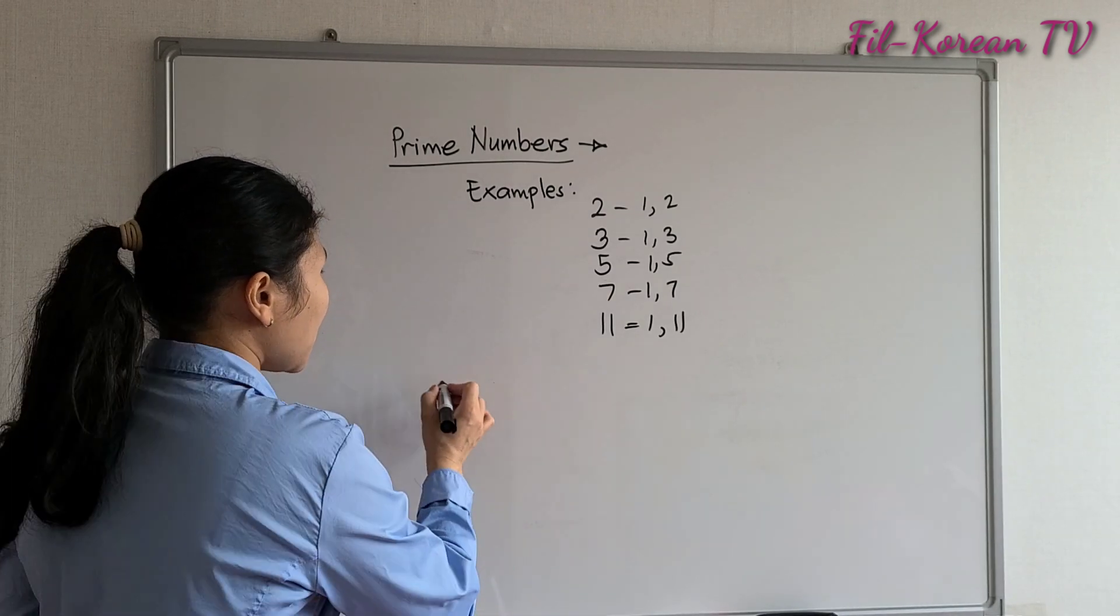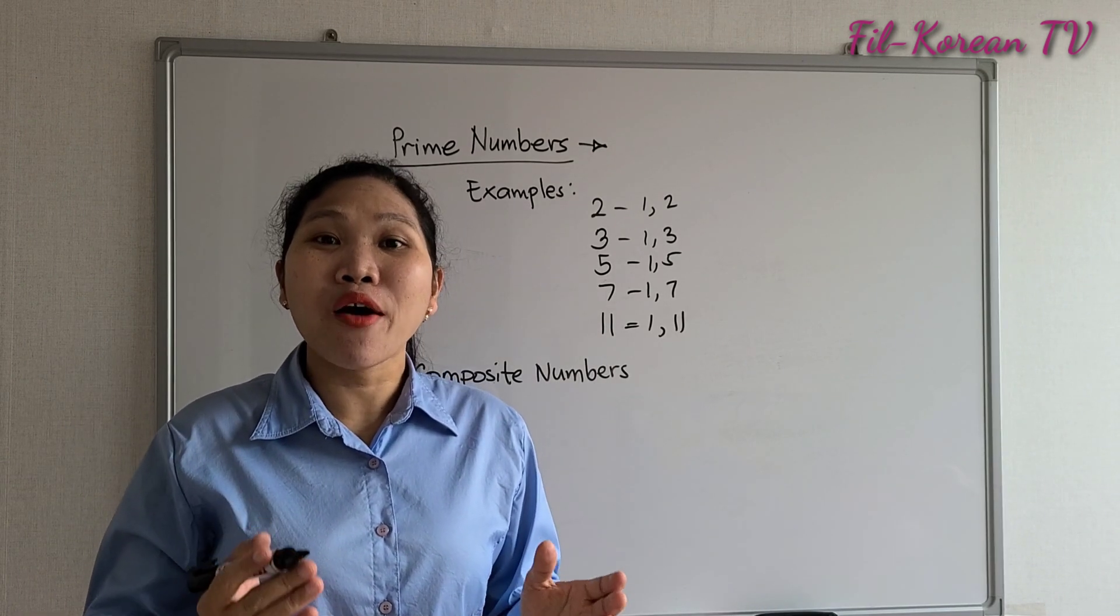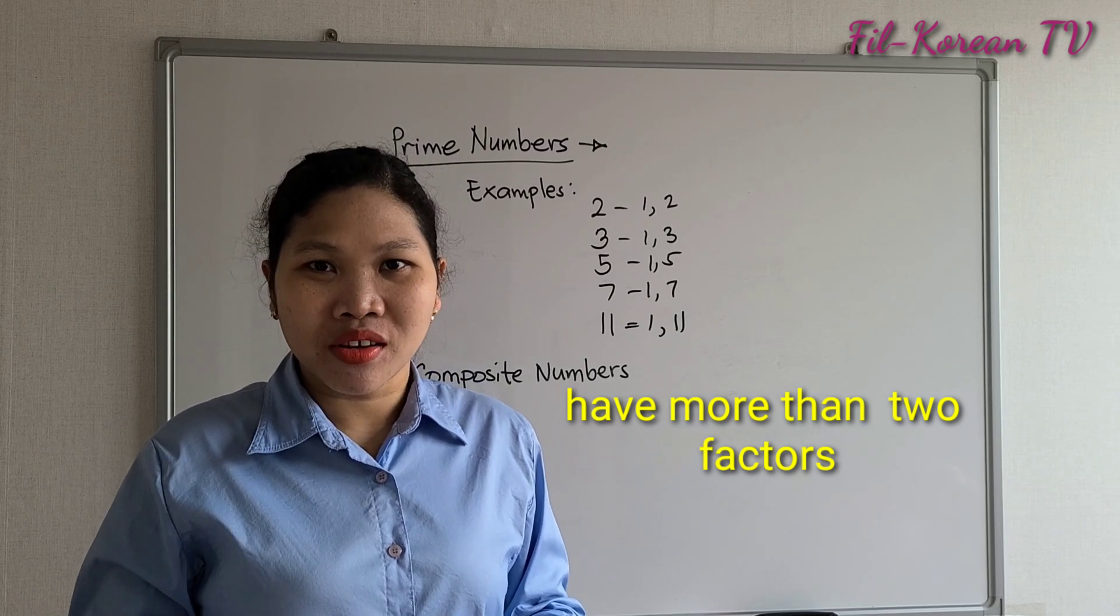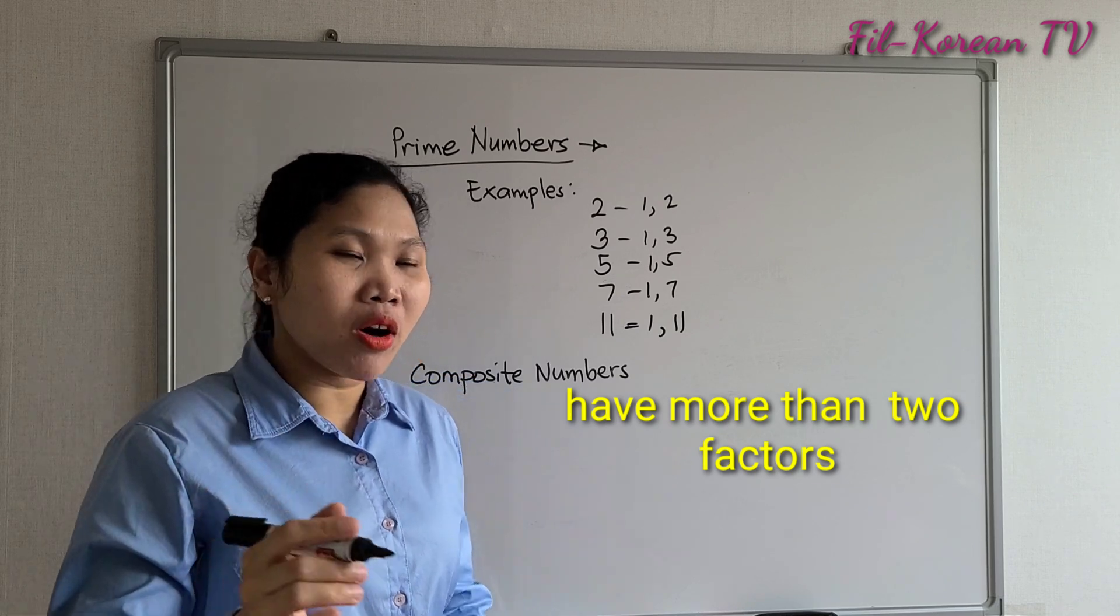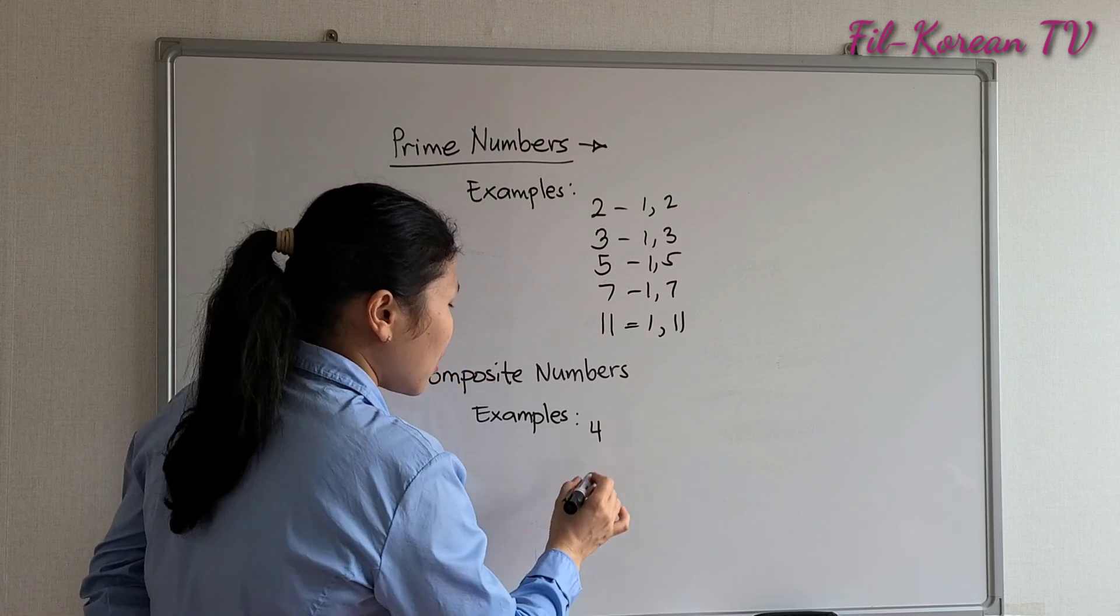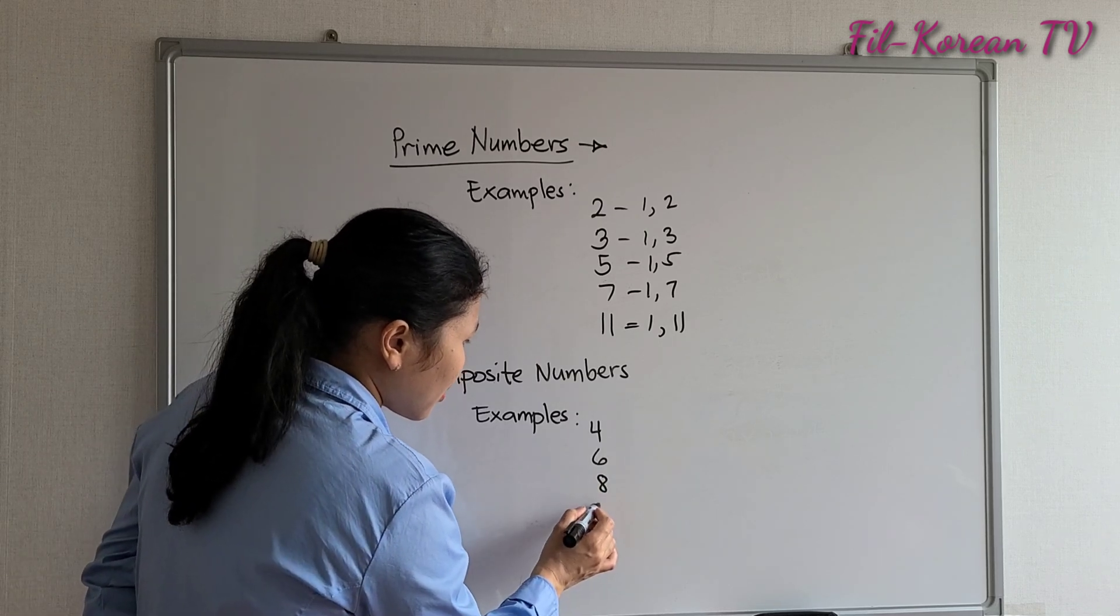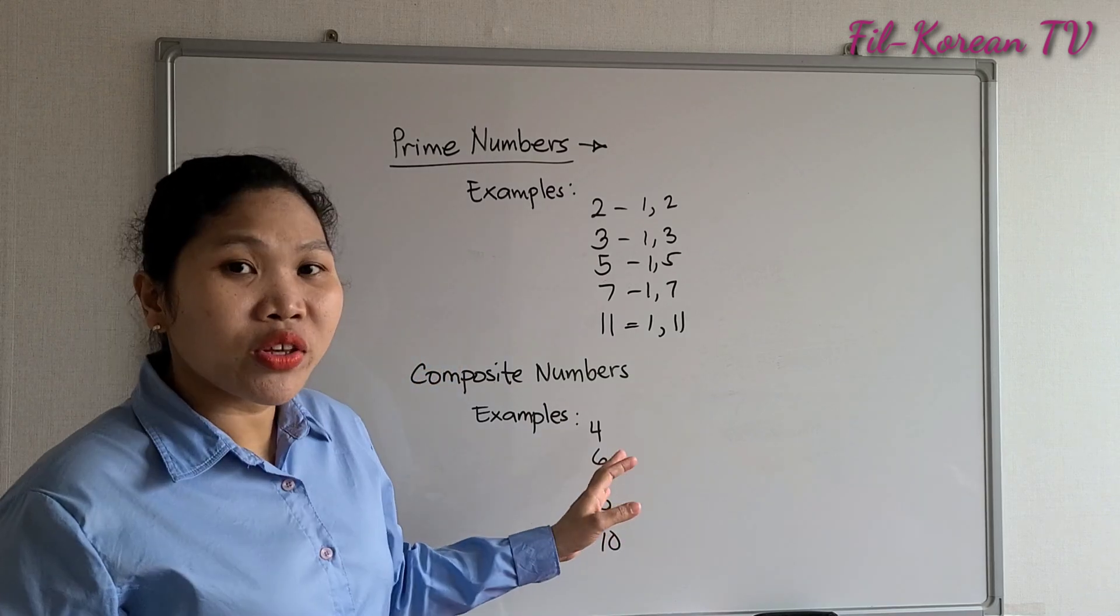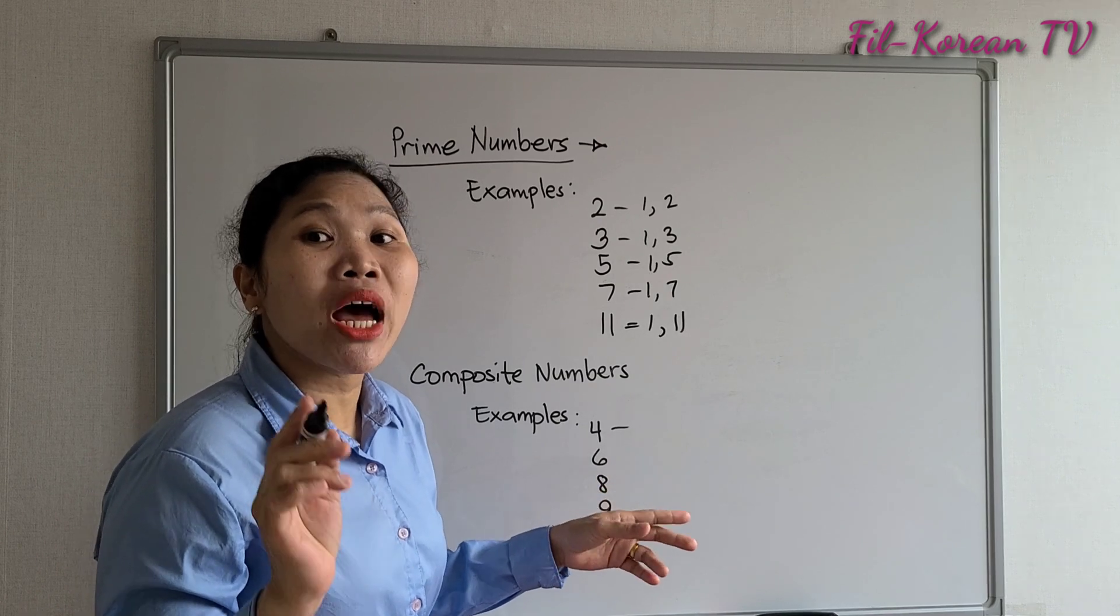Now, let's proceed to the composite numbers. Composite numbers have more than two factors. More than two factors. Examples: four, six, eight, nine, ten. These are lower numbers which are composite.